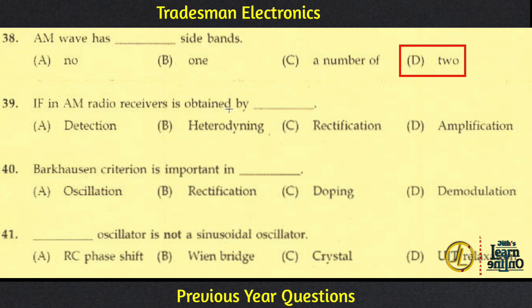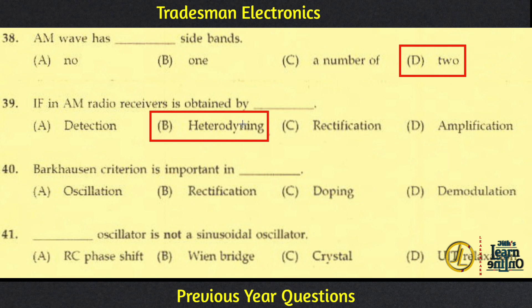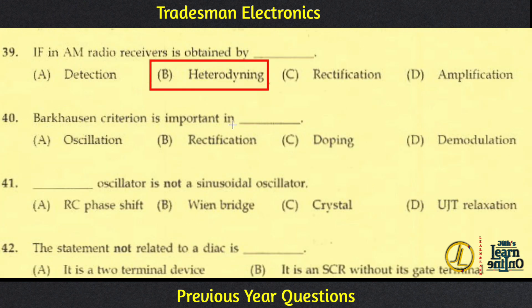The AM radio receiver uses an intermediate frequency. This is based on the superheterodyne receiver, which involves mixing two frequencies — the incoming signal and the local oscillator frequency — to produce an intermediate frequency.